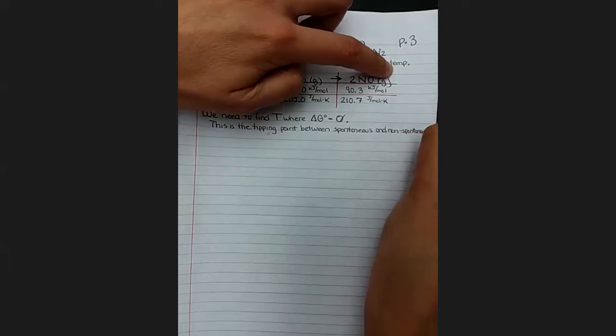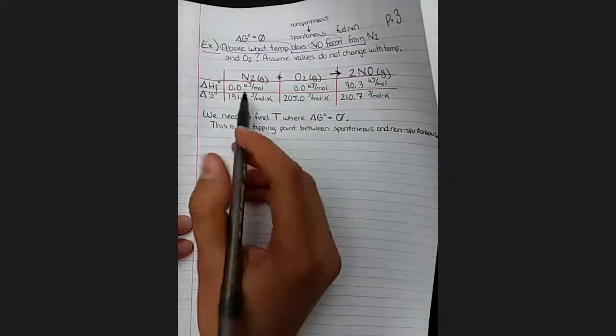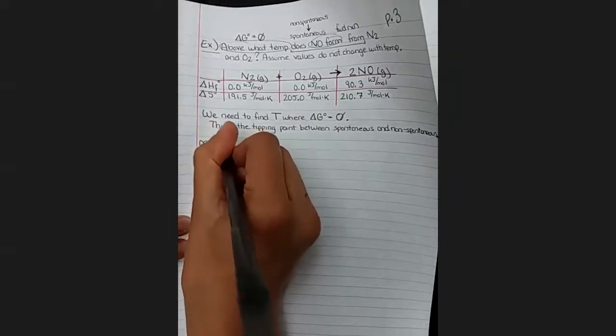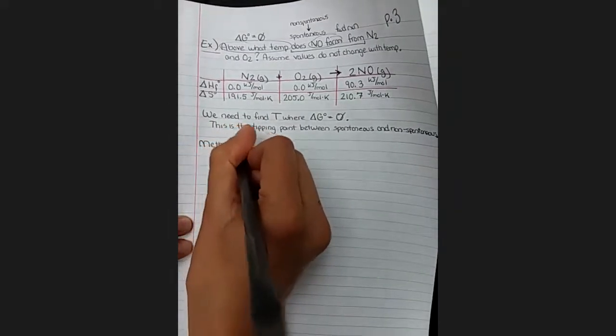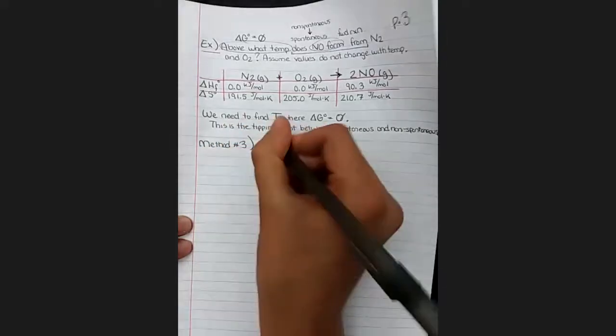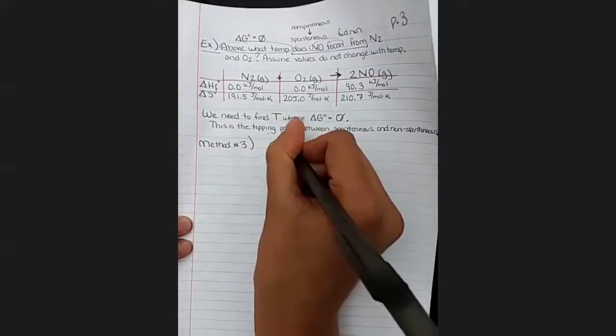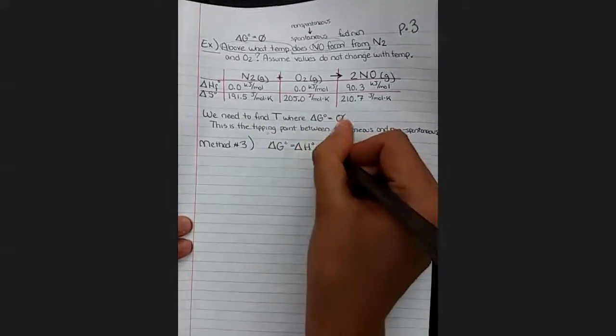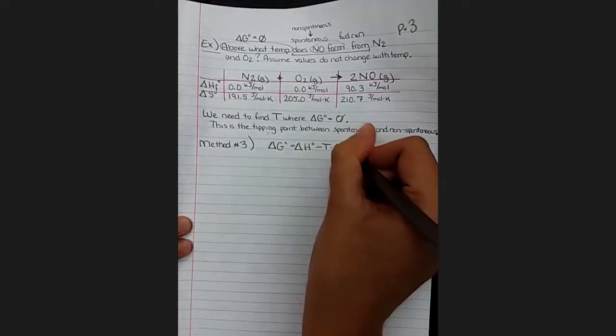So we'll need to find values to plug into this guppies-hate-tartar-sauce formula. Oh, what a long word. There we are. Okay. So because I don't have any delta G values for anything, that means we'll need to solve using method number three from the previous page.